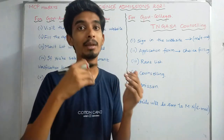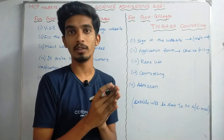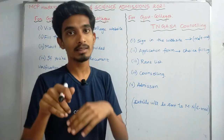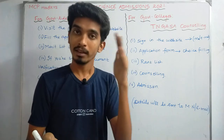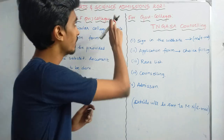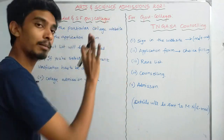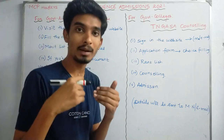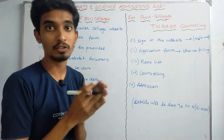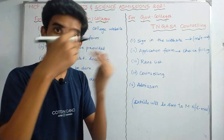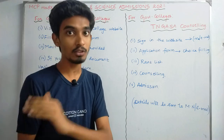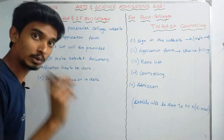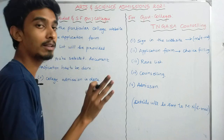In the comments, you will ask me about arts, agriculture, paramedical, and the next agriculture. I will cover arts and science counseling. There are government-aided colleges, private management, and pure private self-financing courses. I will tell you about the government-aided and self-financing colleges.